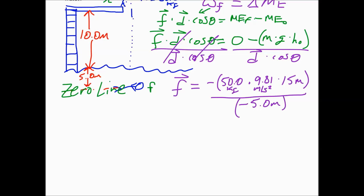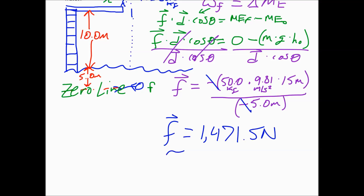Because of that, the negatives cancel, giving a positive force value — which makes sense because that force vector points upward. Typing that into our calculators, the resistive force equals 1471.5 newtons. With two significant figures, that's about 1500 newtons — the average resistive force of the water on the diver.